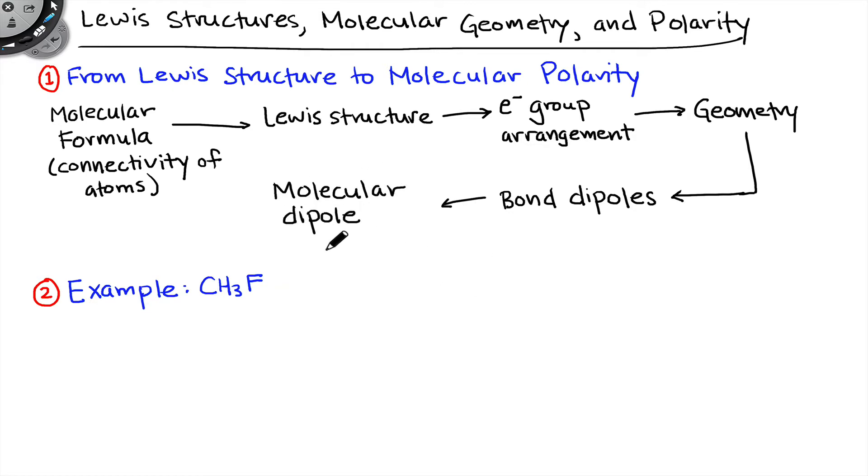Once we have those bond dipoles, we can then reason to the molecular dipole, which is an overall dipole moment for the molecule as a whole. The molecular dipole points directly to whether the molecule is polar or not, essentially by definition. Molecular polarity has to do with the magnitude and direction of the molecular dipole.